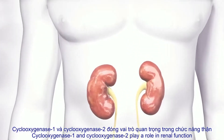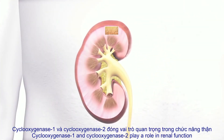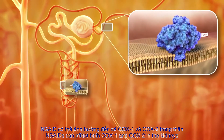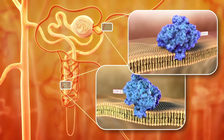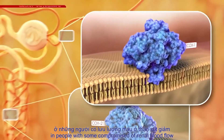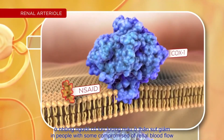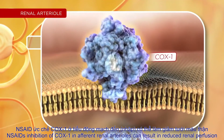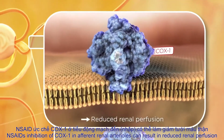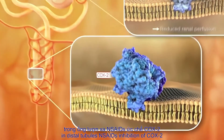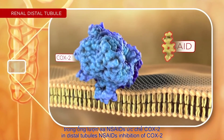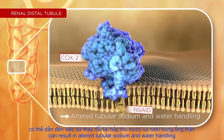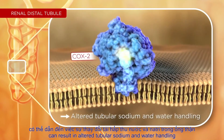Cyclooxygenase 1 and cyclooxygenase 2 play a role in renal function. NSAIDs can affect both COX-1 and COX-2 in the kidneys. In people with some compromise of renal blood flow, NSAID inhibition of COX-1 in afferent renal arterioles can result in reduced renal perfusion. In distal tubules, NSAID inhibition of COX-2 can result in altered tubular sodium and water handling.